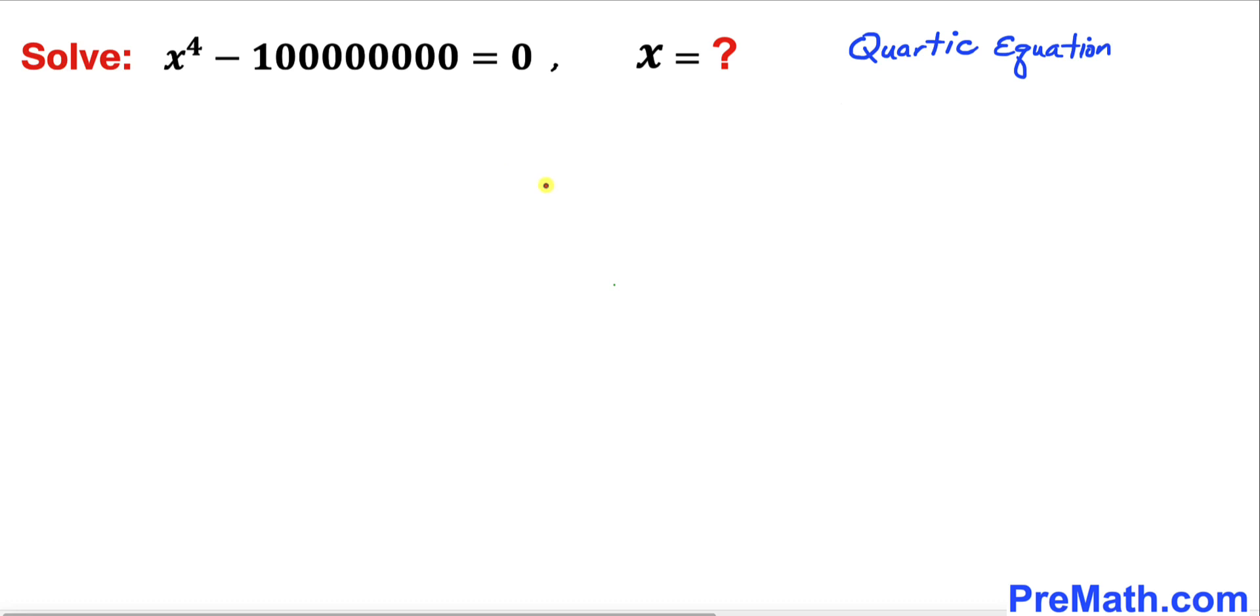Let's go ahead and get started with the solution. As you can see our highest degree is 4, so therefore we are supposed to have four possible roots to this equation.